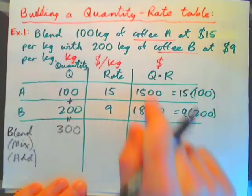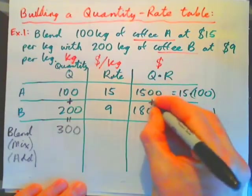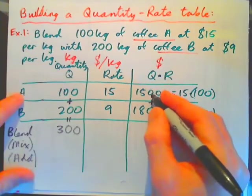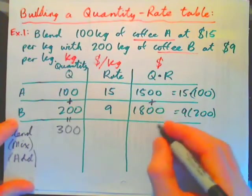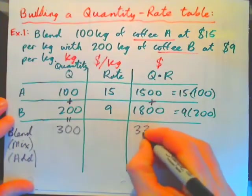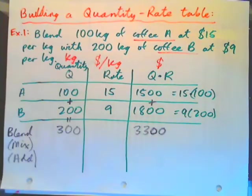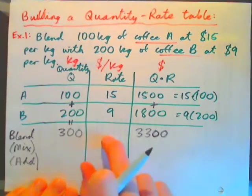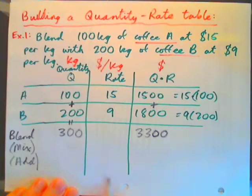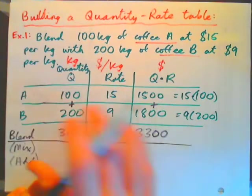But adding these two together does make sense. 1,500 is the cost of coffee A, 1,800 cost of coffee B. When you add them, you get $3,300, don't you? And that does make sense, because the $3,300 represents the total cost. Now the rate, we're going to come back to it. So this is the blend row, and we're done.